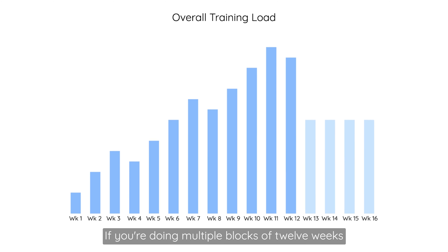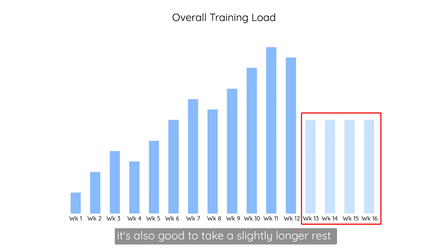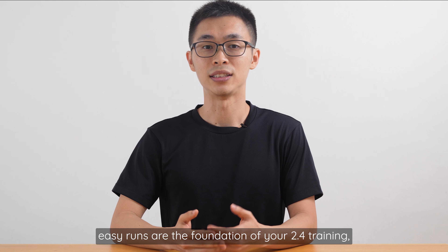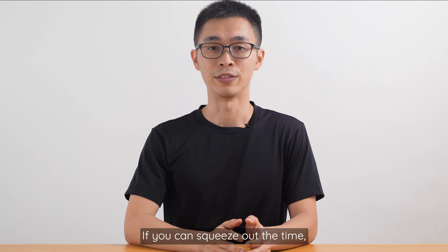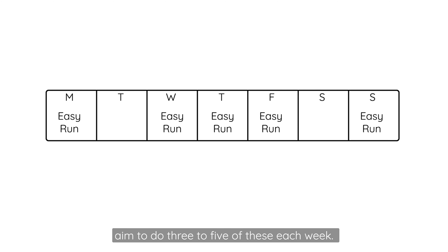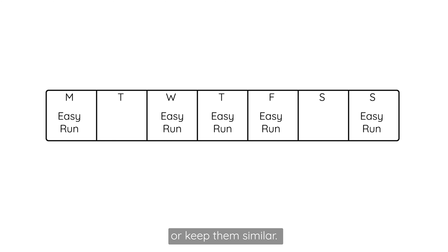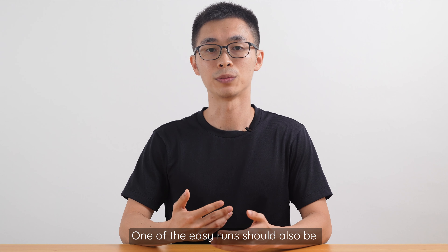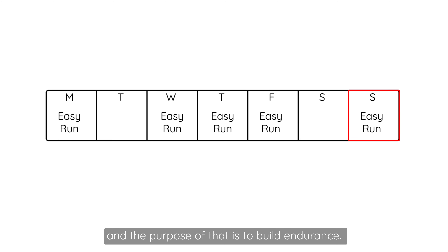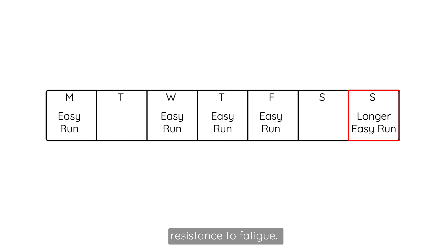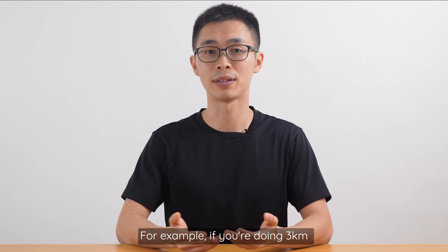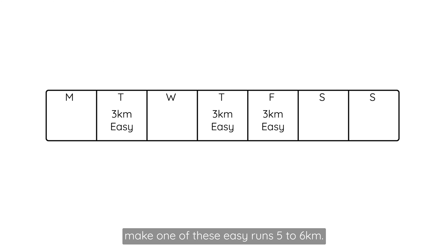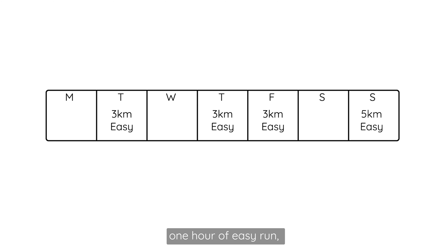Easy runs are the foundation of your 2.4 training, so on your draft training plan, you're first going to insert the easy runs. If you can squeeze out the time, aim to do 3 to 5 of these each week. One of your easy runs should also be 1.5 to 2 times longer than the others to build endurance — specifically to increase your legs' resistance to fatigue so you can handle the higher load of your faster workouts. For example, if you're doing 3km for all your easy runs, make one of them 5 to 6km. Eventually, once you're able to hit one hour of easy running, you should be able to handle all the faster workouts for your 2.4 training.